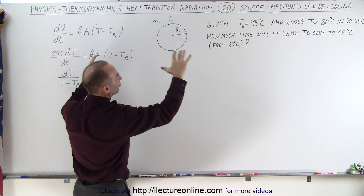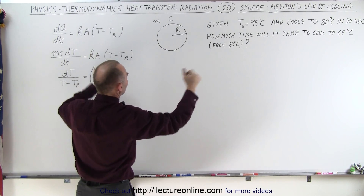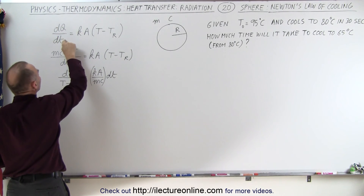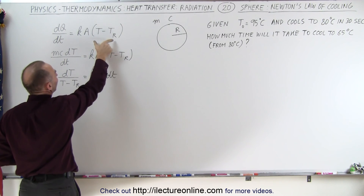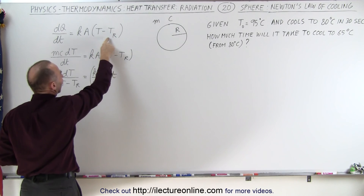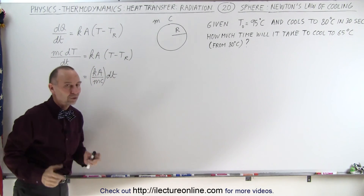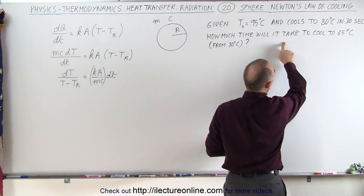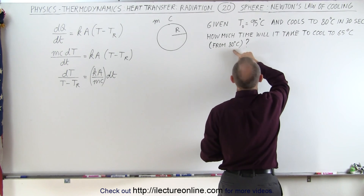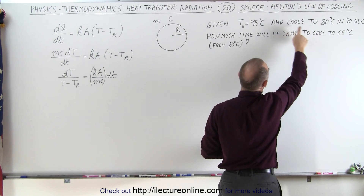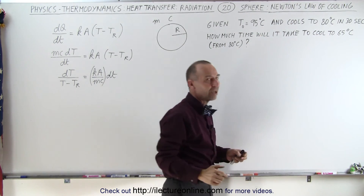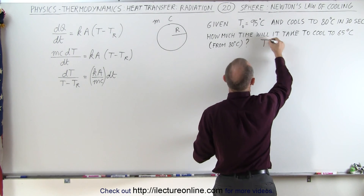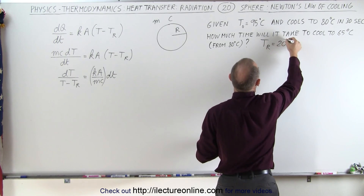In this case, the sphere is subjected to the temperature of a room — we're inside a building, inside a room. We have an equation that describes that the heat emanating from the object will be equal to some constant times the surface area times the difference in the temperature of the object and the temperature of the room. The question is how much time will elapse before it cools from 80 down to 65 degrees? There's a 15-degree cooling from 95 to 80, which takes 30 seconds. How much time will it take to cool the additional 15 degrees? The room temperature is equal to 20 degrees centigrade.